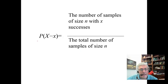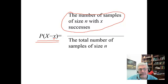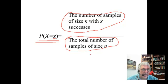If we're looking for the probability of having exactly little x successes, this is the number of samples of size n that have x successes in them divided by the total number of samples of size n. These two different quantities introduce us to a part of mathematics known as counting.